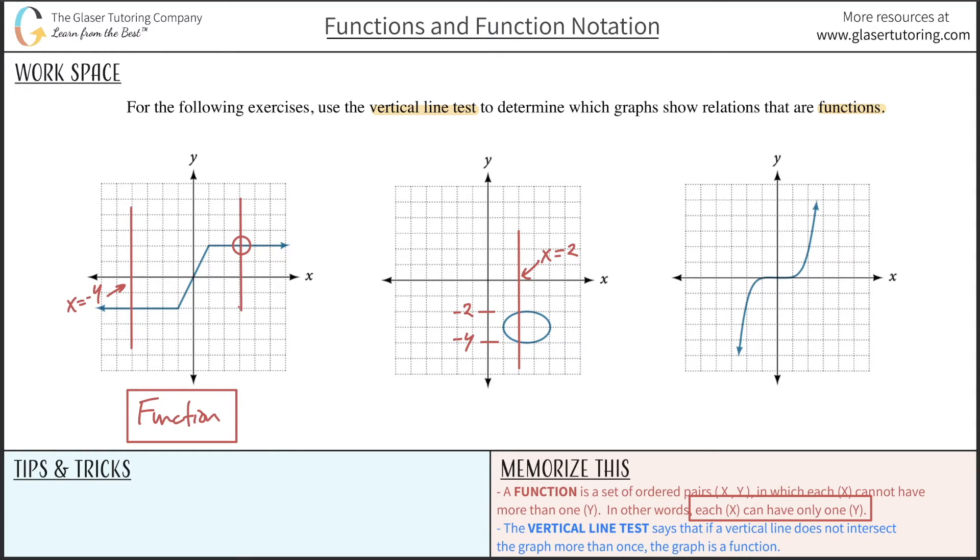The definition of a function says that each x can have only one y. But in this graph, this x can have two y's. Big no-no for a function - it fails the vertical line test. So this is not a function.